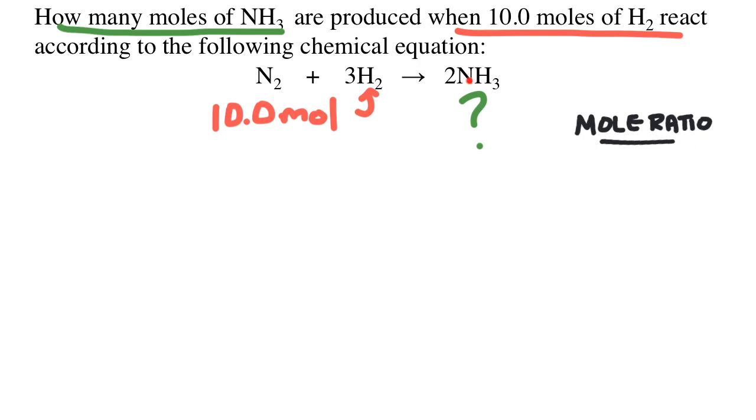So we're comparing ammonia and hydrogen gas, and the ratio would be 2 to 3. That's the coefficients. So that means the reaction makes two thirds as much ammonia compared to hydrogen.